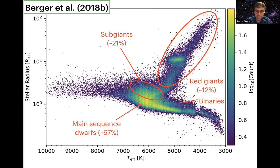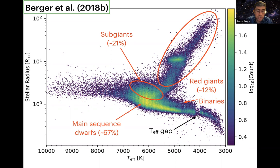There appears to be a secondary main sequence for cool stars — these are actually likely main sequence binaries, because these stars have not had enough time within the age of the universe to evolve to such large radii. There also appears to be a gap in the distribution of effective temperatures. This is because we took our effective temperatures straight from Mathur et al. 2017, whose authors used diverging effective temperature scales, separating the M-dwarfs and K-dwarfs, producing a gap at about 4100 Kelvin.